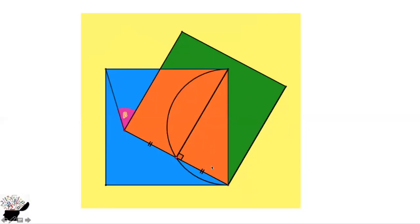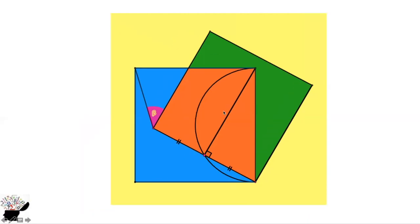Now, this length is equal to this length. We can draw a line from the end of the square to this end. Since this side is the same and the angle is 90 degrees, what type of triangle is this? It is an isosceles triangle — it has two equal sides.